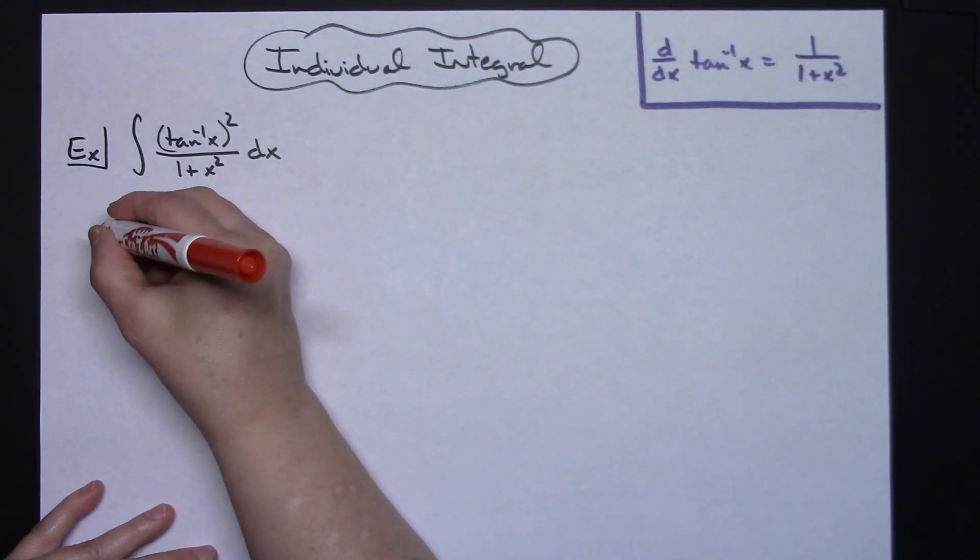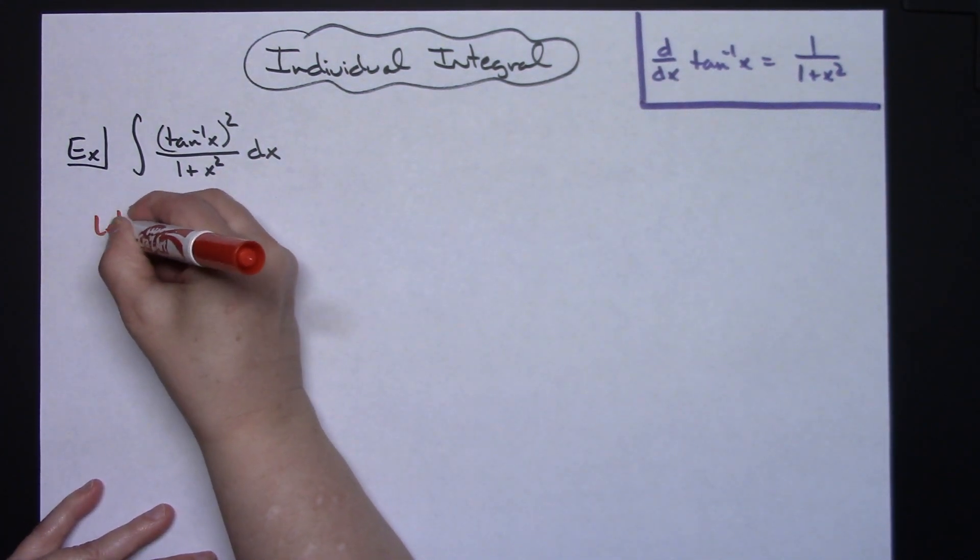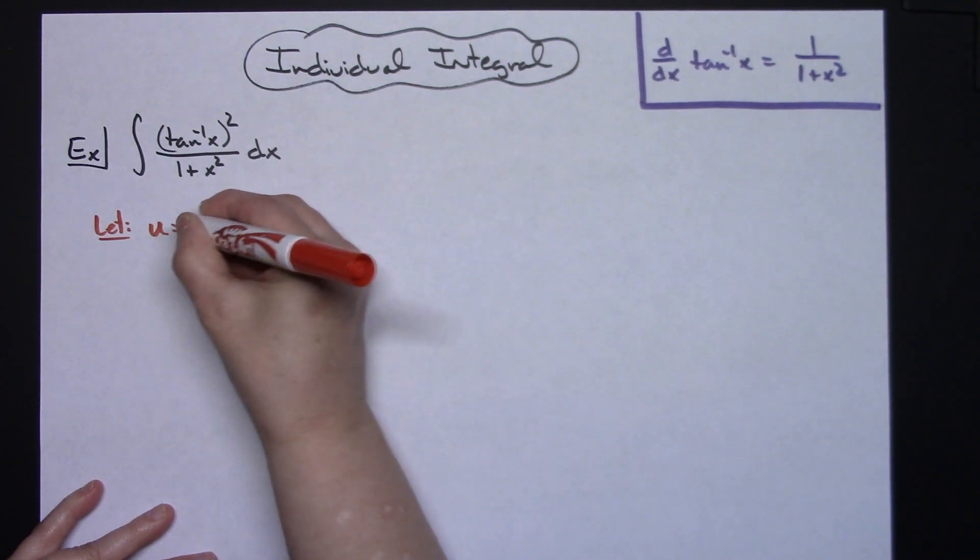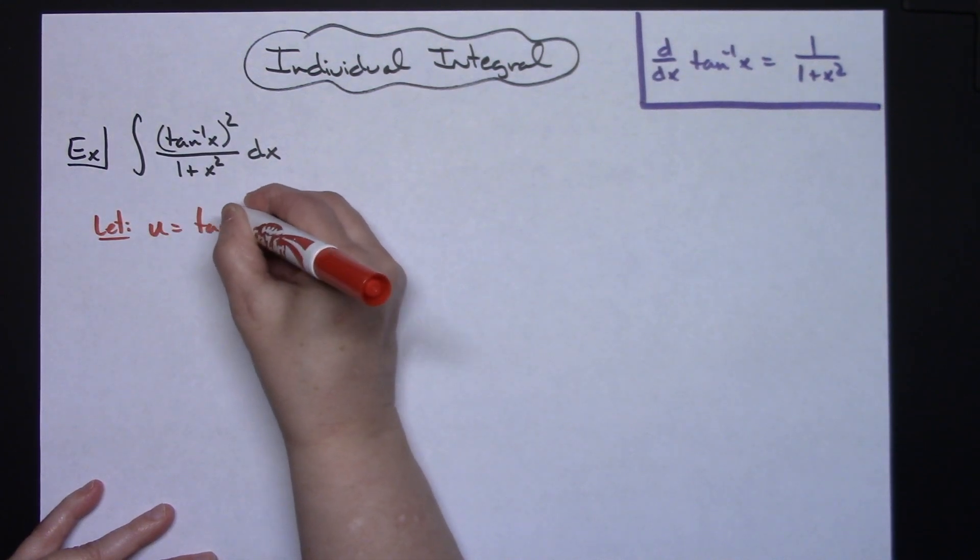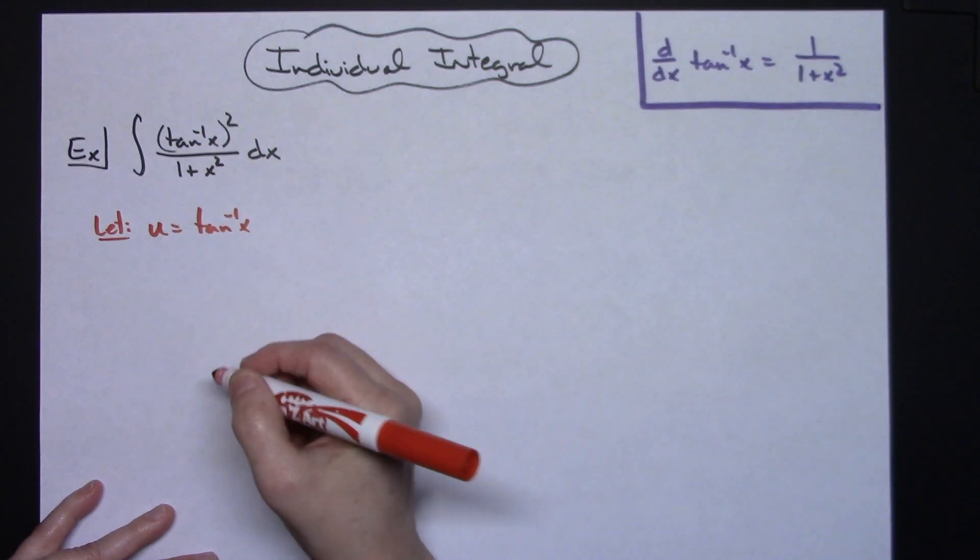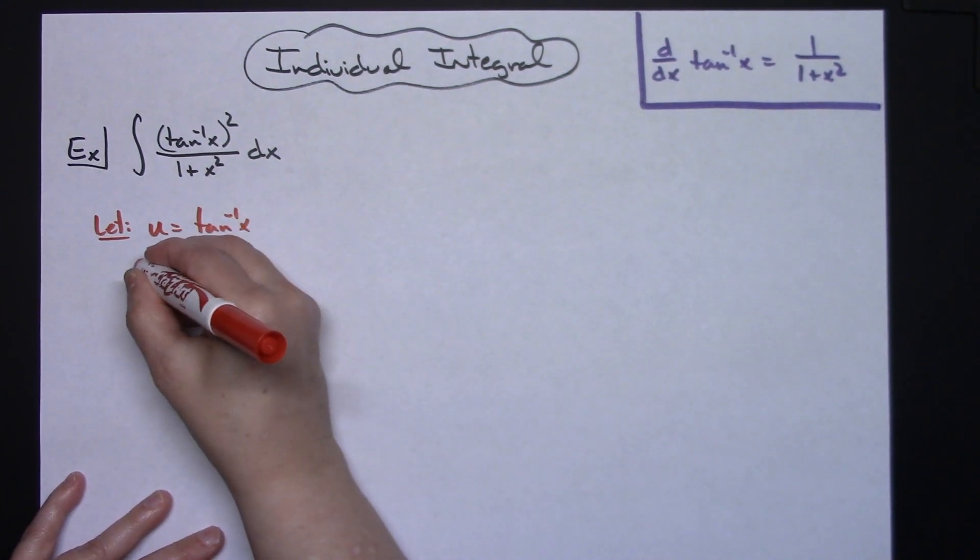With that being said, we're going to start by letting our u equal that inverse tangent of x, which is the inside of that top numerator there. I'm going to take the derivative of both sides.